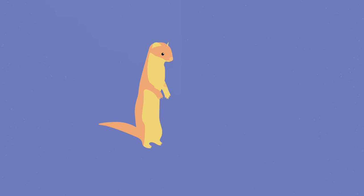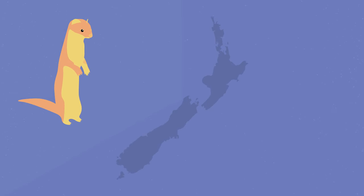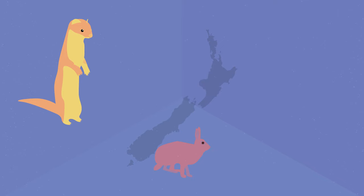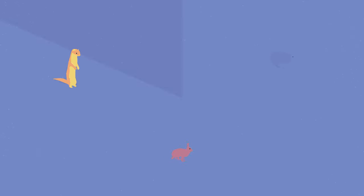Or the ermine, which after being introduced to New Zealand to control rat and hare populations, ended up becoming a threat to native bird species.